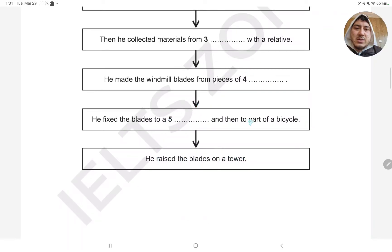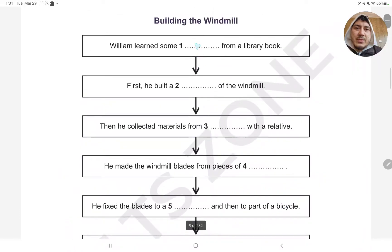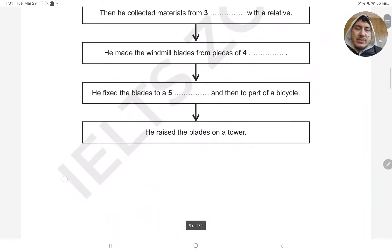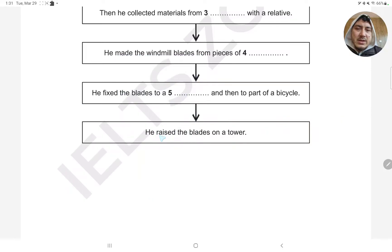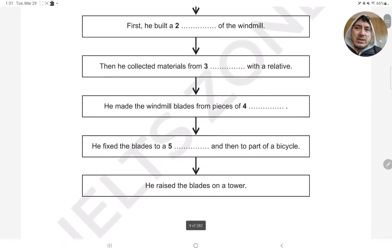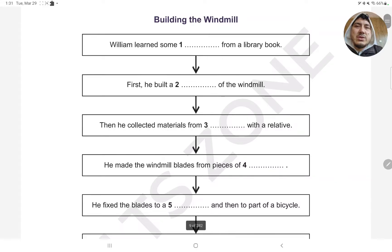You can see the fact that you have to go to the river. I'm writing a book from the windmill. I've written a book from the library book. He wrote a book. He raised the blaze on the tower. William learned some Vanessa from a library book. He built a Vanessa of the windmill.